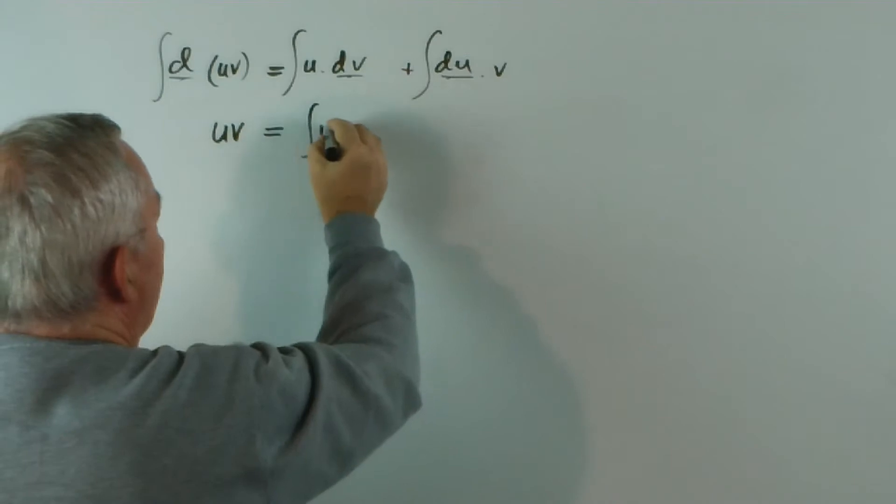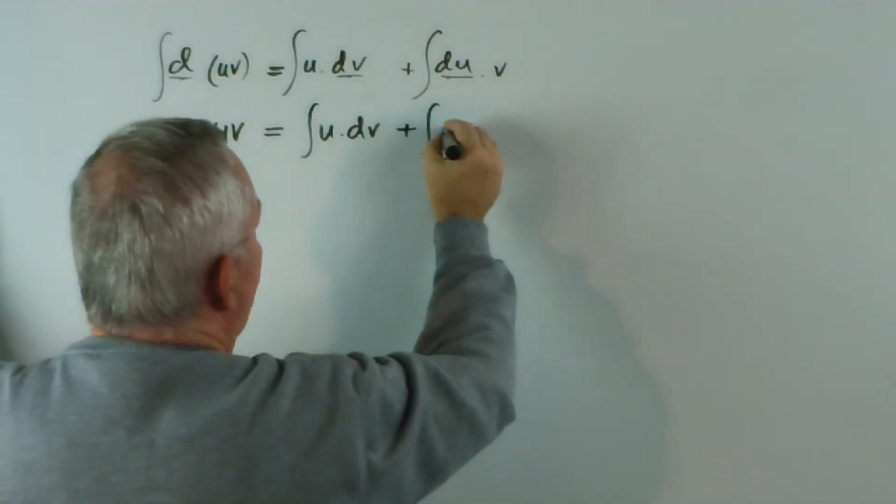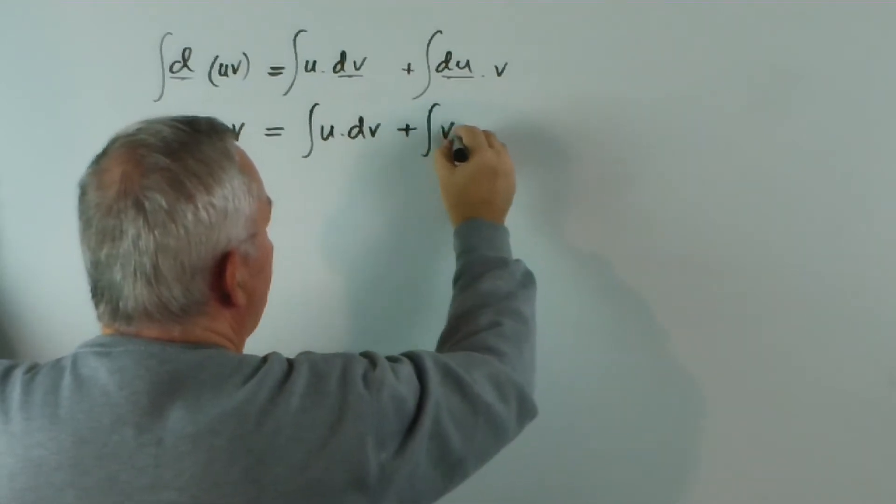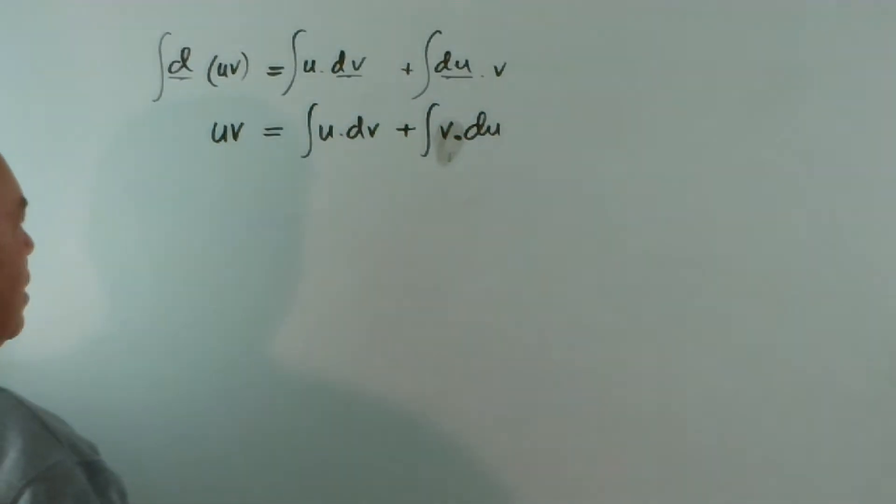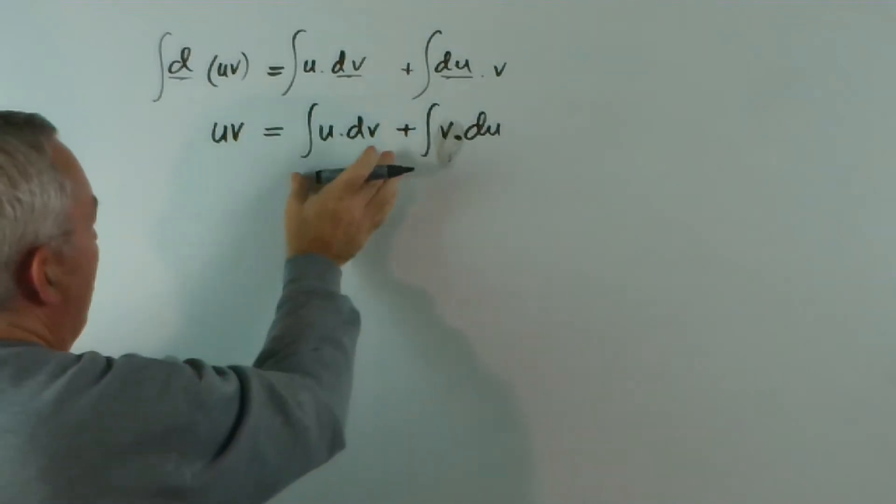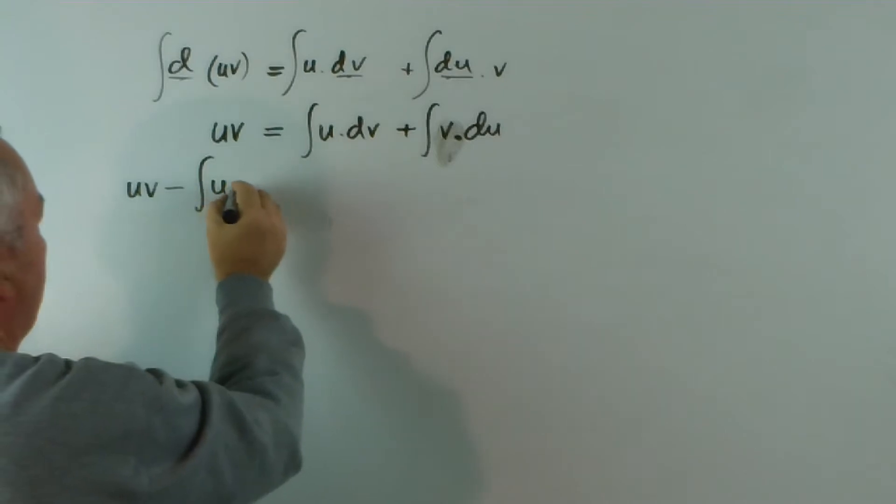And here we have the integral of u dv plus the integral of - I'll write it in reverse - of v du. So, how do we rearrange this? If I move this over here, I get uv minus the integral of u dv. Or sorry, I get the integral of v du equals uv minus the integral of u dv.